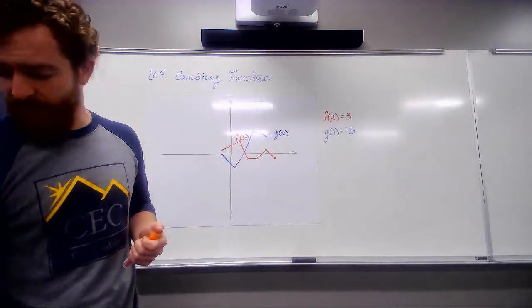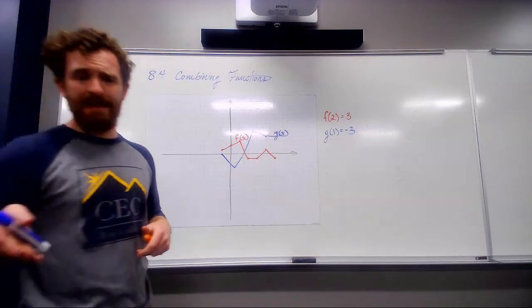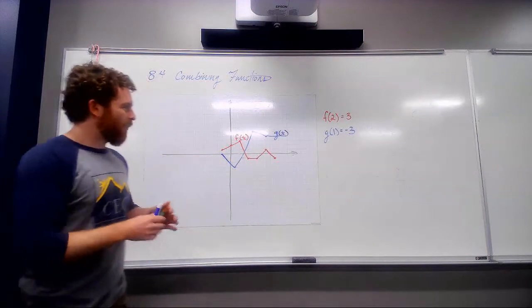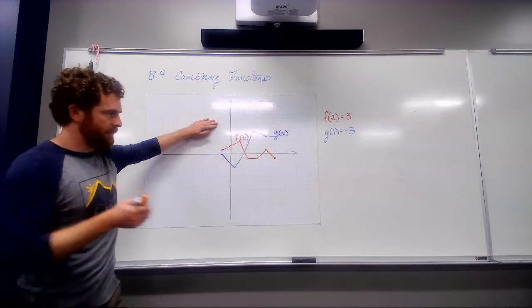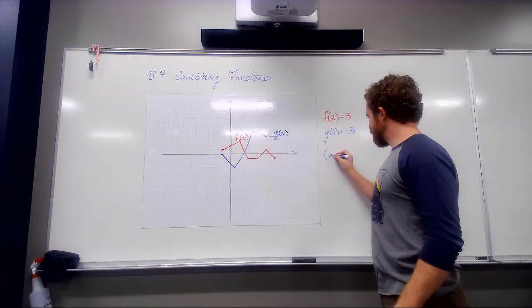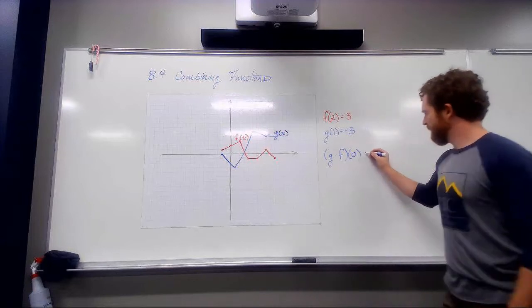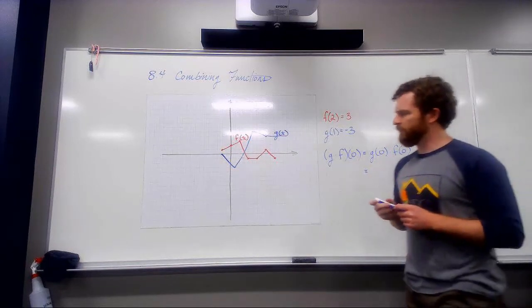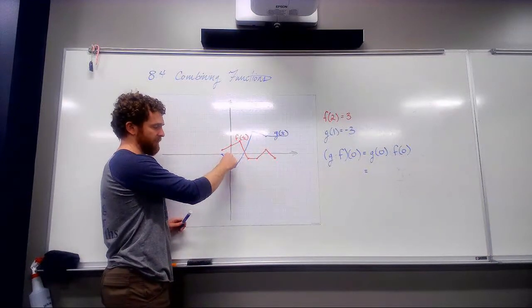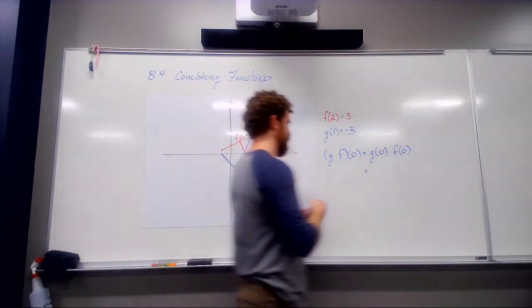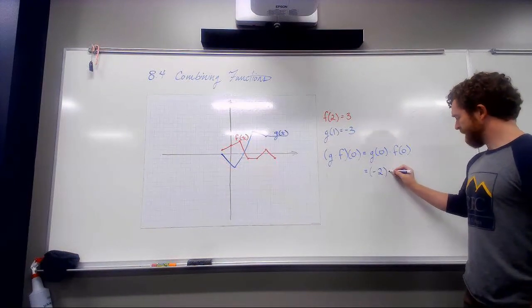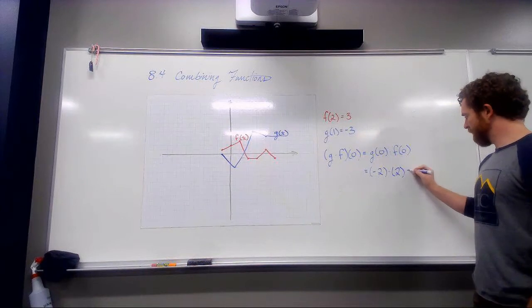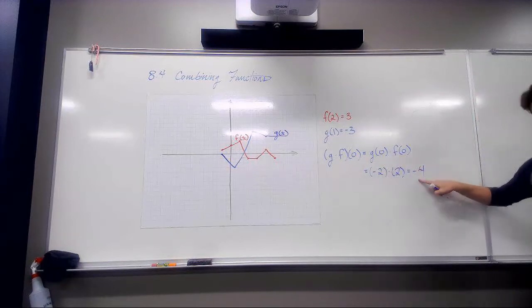So when we take a look at combining functions here, when I say g times f of 0, well I don't have the line for the function g times f. But I can find each of those individually. Because remember g times f of 0 is the same as g of 0 times f of 0. So if I find those pieces individually, I can do the multiplication. So at 0, x equals 0, down to my g line, it's at negative 2. So g of 0 is negative 2. And f of 0 is positive 2. So I've got negative 2 times positive 2. g times f of 0 is negative 4.